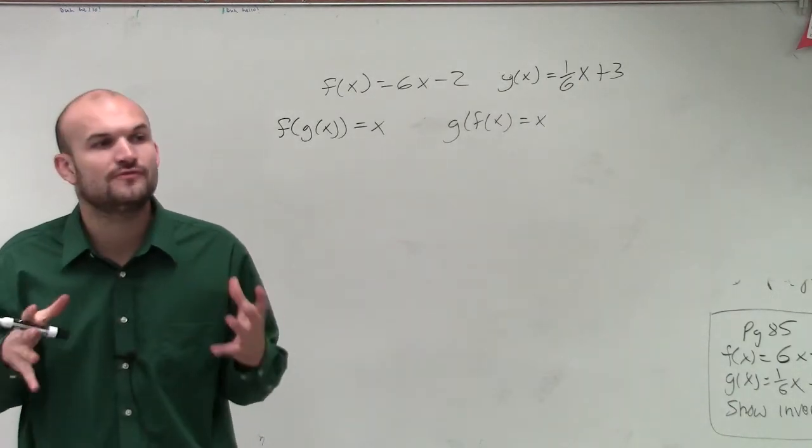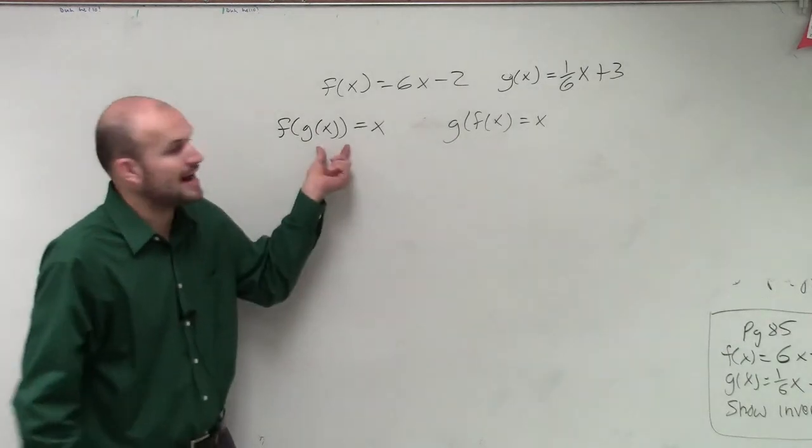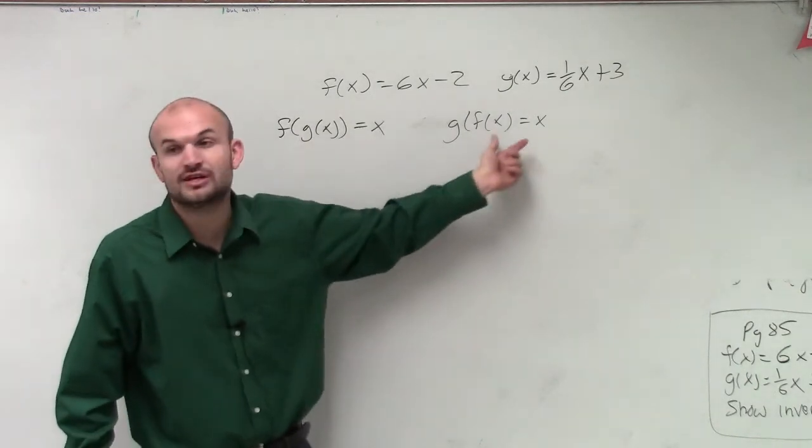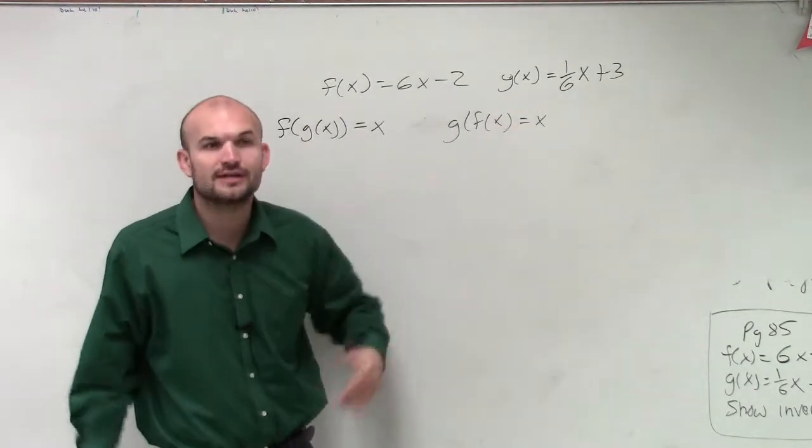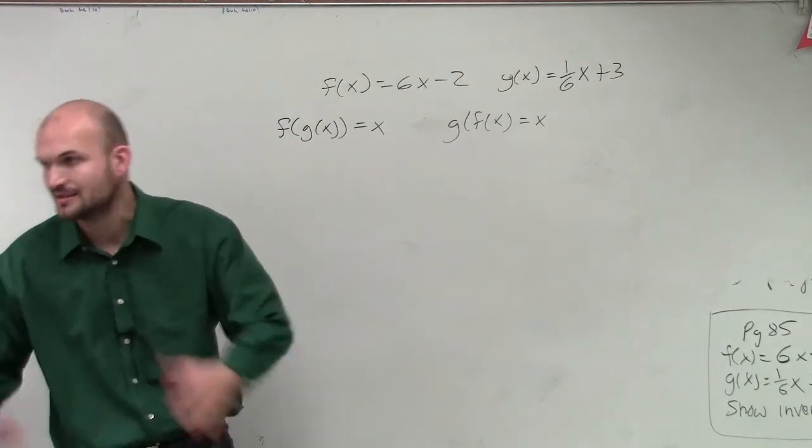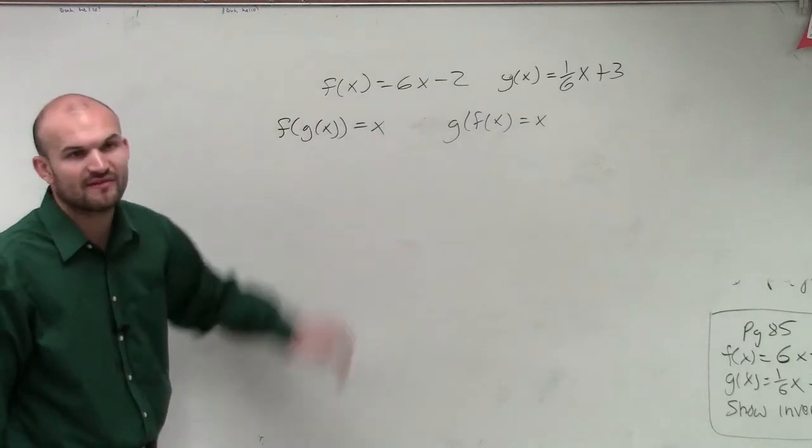So two functions are inverses if and only if the composition of your two functions, f of g of x equals x and g of f of x equals x. So let's go ahead and see if we can prove that these are going to be inverses. Now, obviously, we already checked one. But let's see how the composition looks out and see if it provides us with x or not.